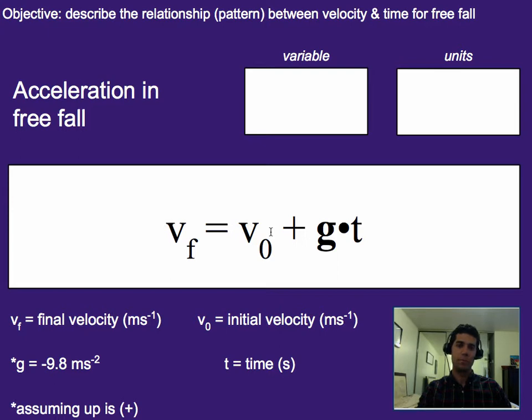Well, to figure out what pattern this is, or relationship between velocity and time, we're going to switch that a little bit, and that way we can look at our objective, which is what is the relationship or pattern between velocity and time for free fall.